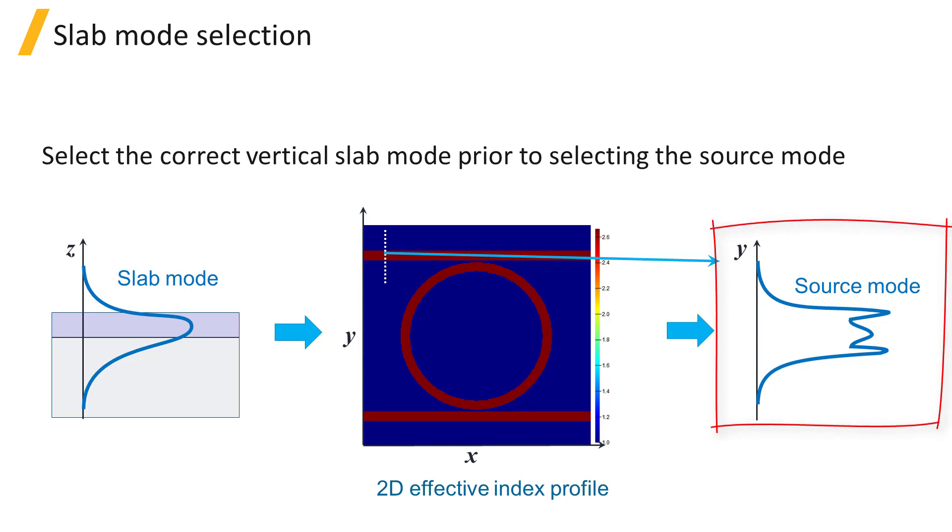Sources in VarFDTD need to know the effective material properties to function properly. For example, the mode source calculates the supported waveguide modes based on the effective 2D material properties, not the original 3D structure.